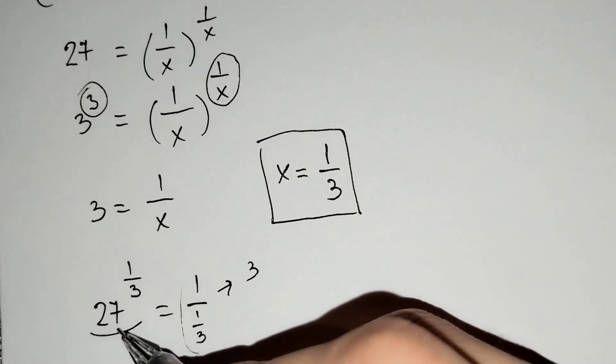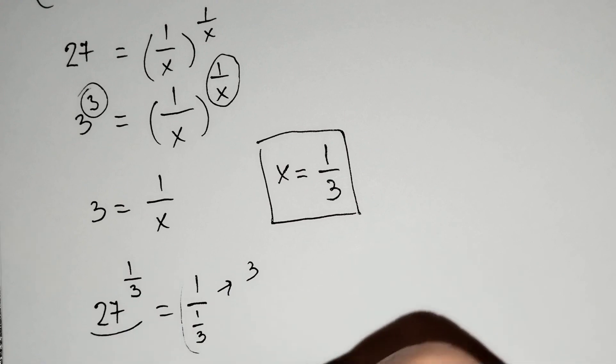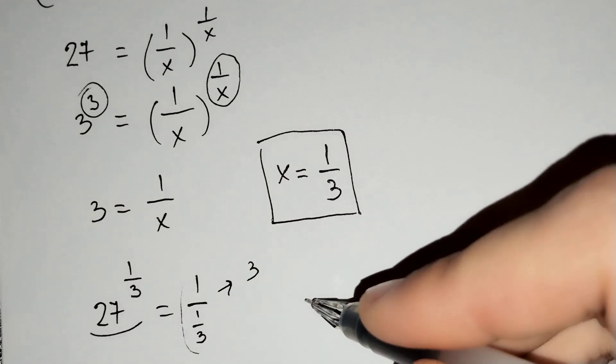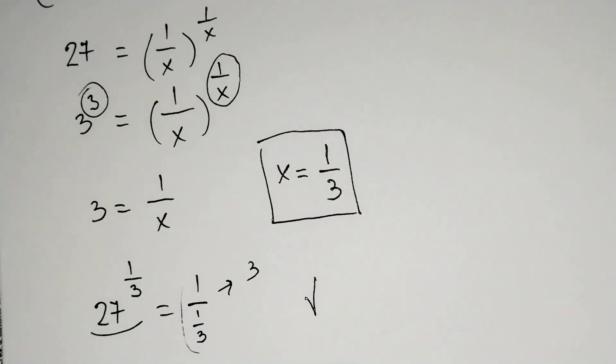And 27^(1/3) = 3. Our answer is correct.